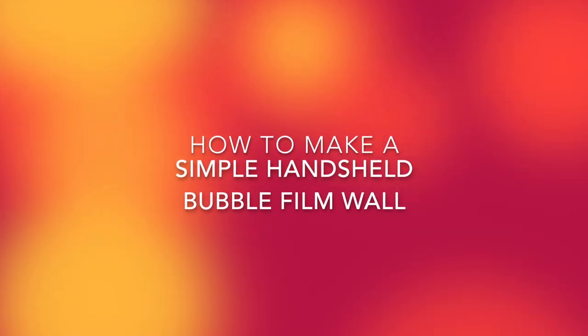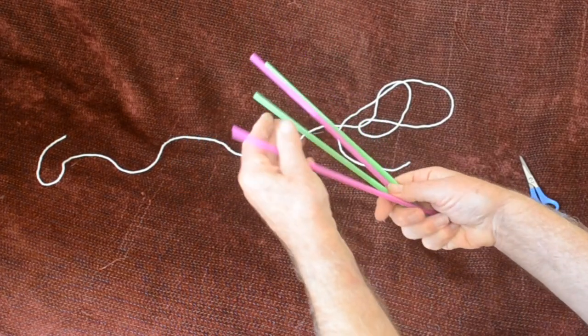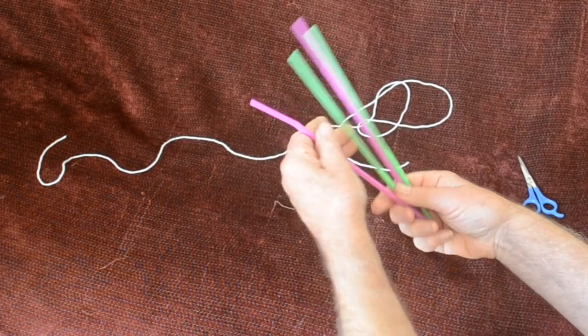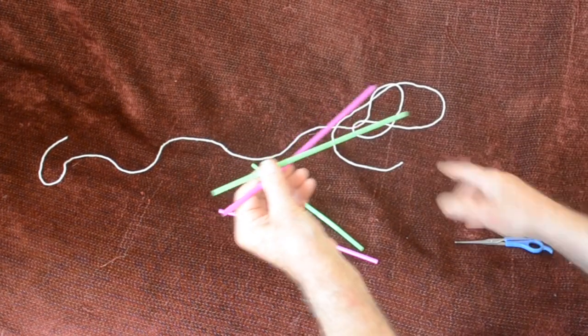This is how to make a simple handheld bubble film. You've got four bendy straws, and what you do is take two of them and cut off the bit that isn't bendy.